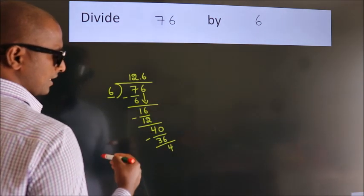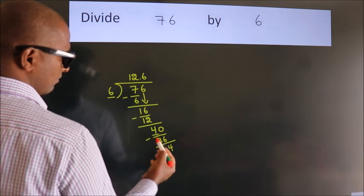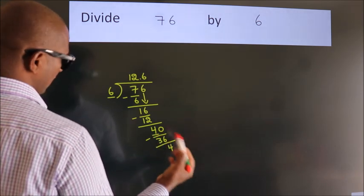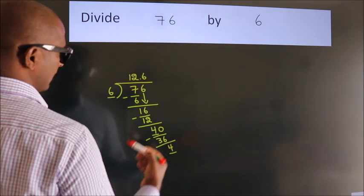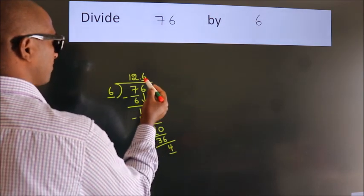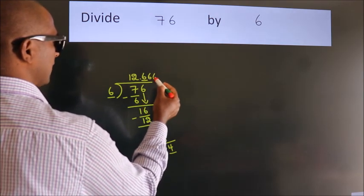Now, you observe. We had 4 here and we got 4 again. That means, this number keep on repeating.